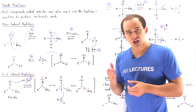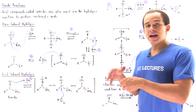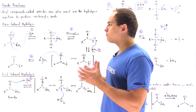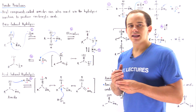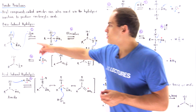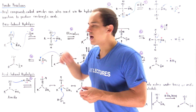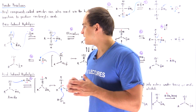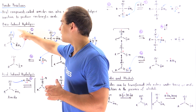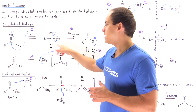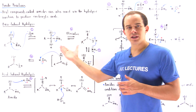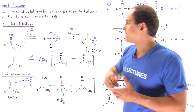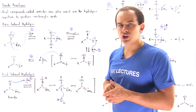Base-induced hydrolysis simply means we have hydroxide as well as water that predominates in our mixture. The hydroxide acts as the nucleophile, attacking the carbon, displacing the pi bond, and forming the tetrahedral intermediate that contains a negative charge on our oxygen.